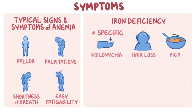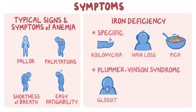Sometimes, iron deficiency anemia can occur in the context of Plummer-Vinson syndrome, along with glossitis, meaning inflammation of the tongue, and esophageal webs, which are membranes made up of damaged esophageal epithelium and mucosa.